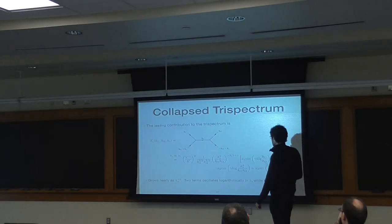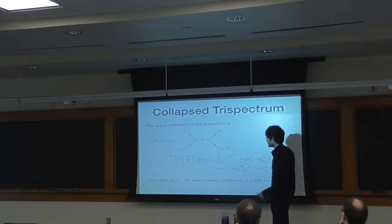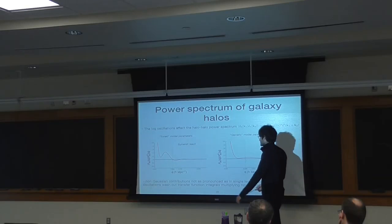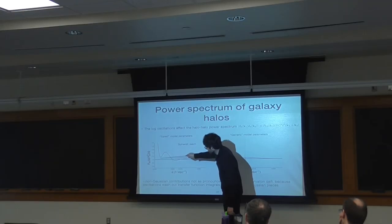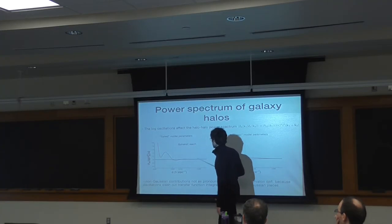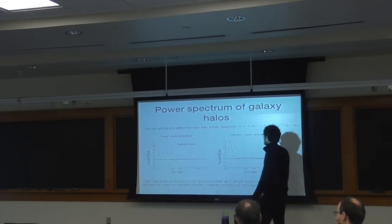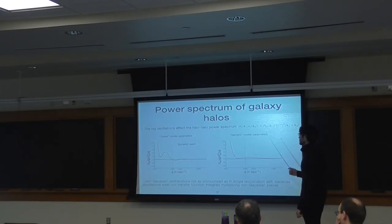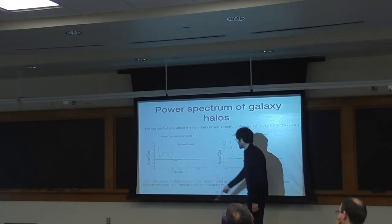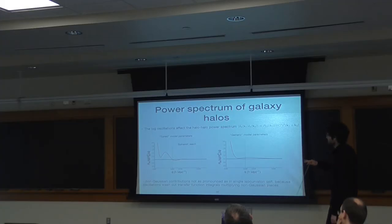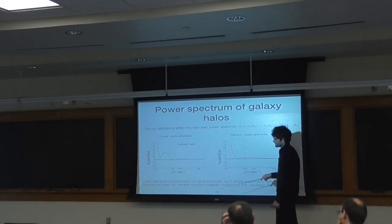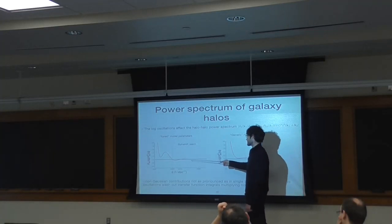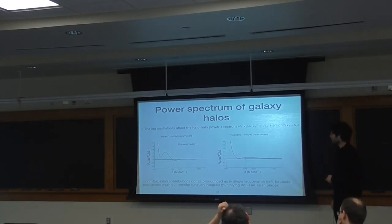One can compute the bispectrum shape function. We find that compared to the local non-Gaussianity shape from single isocurvaton QSFI in the regime where mu and m are much less than H, the multi-isocurvaton QSFI shape has logarithmic oscillations but the amplitude keeps up almost to the local non-Gaussian shape. This is a new shape template that Planck has not constrained before — we provide a template in our paper and maybe they could search for it in their dataset. The trispectrum also displays logarithmic oscillations as well as nearly cubic power law growth. One can use these non-Gaussianities to compute the halo two-point function, which will have oscillations as well — it goes up and then oscillates, which is an interesting shape compared to before when it just grew monotonically. However, the non-Gaussian contributions are not as pronounced as in single isocurvaton QSFI, because the oscillations wash out the integrals and make the numerical contributions smaller.